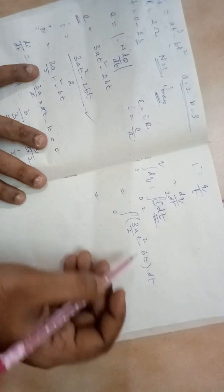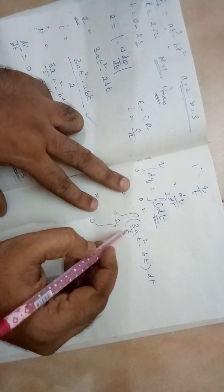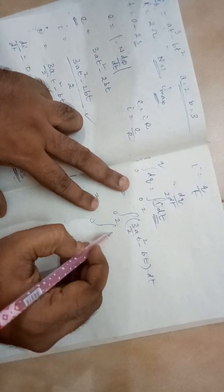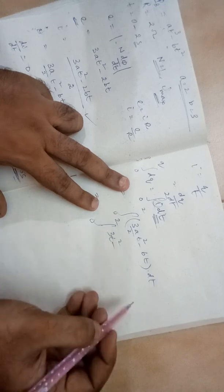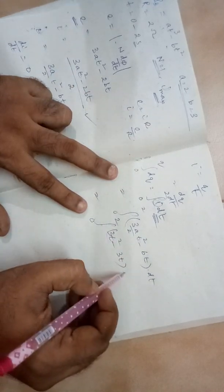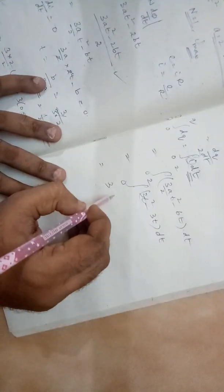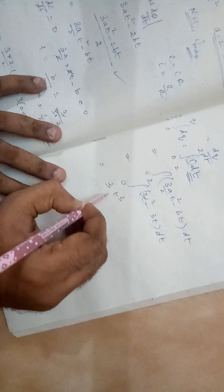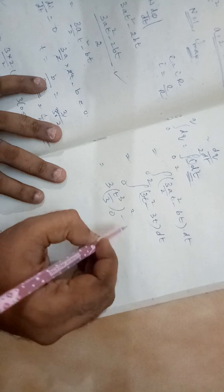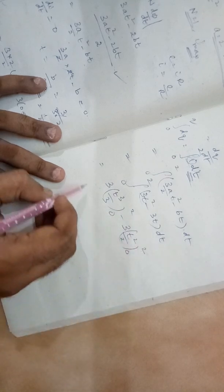If you put the values A and B, it becomes 0 to 2, 3 into 2 by 2. This is 3 into 2 by 2, 2 by 2 is gone, 3t square minus B. B is 3t, DT. If you simplify, if you integrate this, it becomes t cube by 3 from 0 to 2 minus 3 into t square by 2 from 0 to 2.